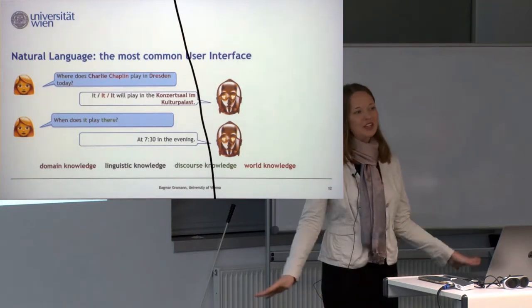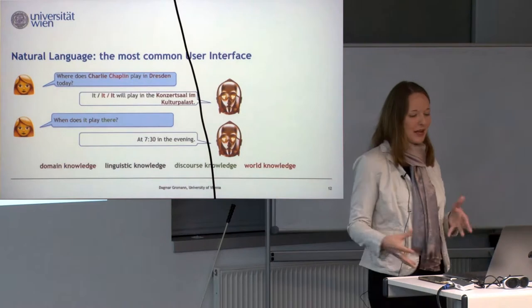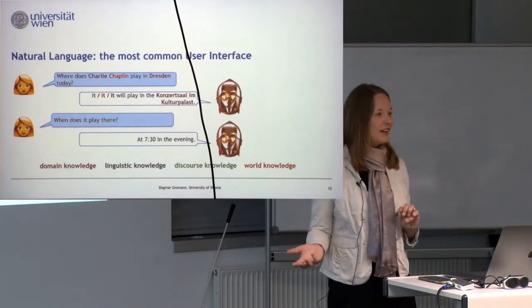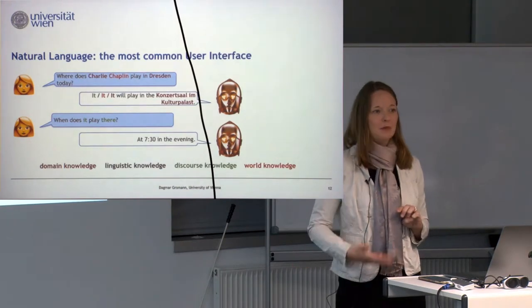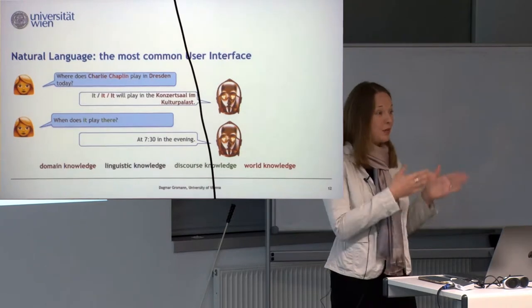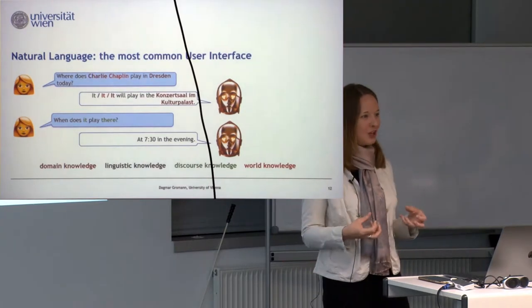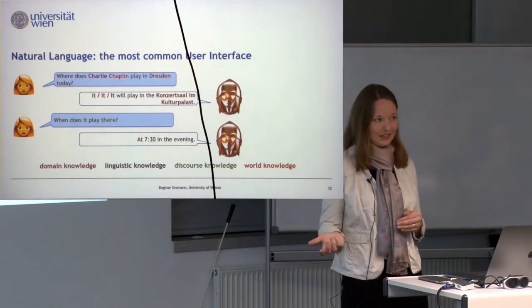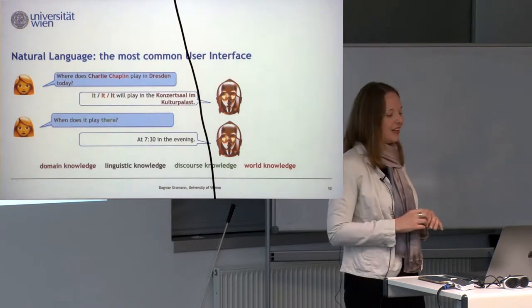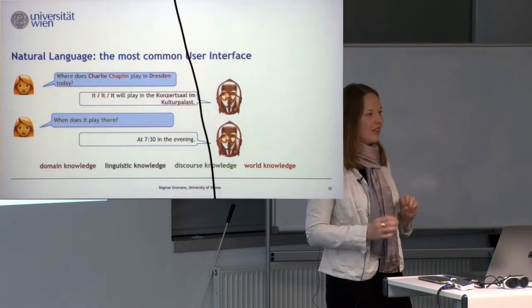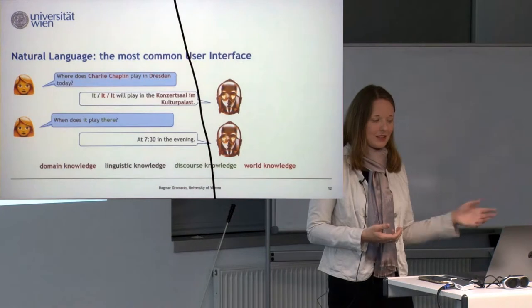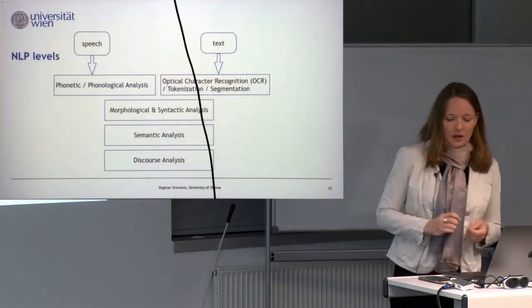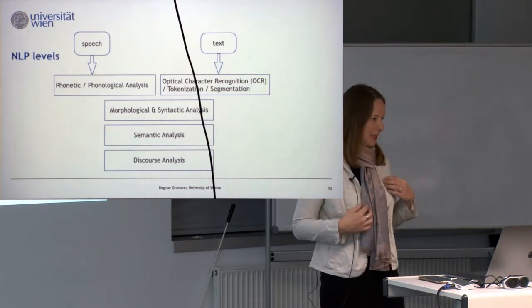Natural language could be described as the most common user interface in the world. You need domain knowledge, linguistic knowledge, discourse knowledge, and world knowledge. 'Tonight there's Charlie Chaplin in Dresden' — you need to understand it's a movie playing in Dresden, not the person who is already dead. The system could reply that it will play at the Kulturpalast, but when you ask 'when does it play there?' — 'it' refers to the event, 'there' refers to the location — there's a lot of referencing to process.